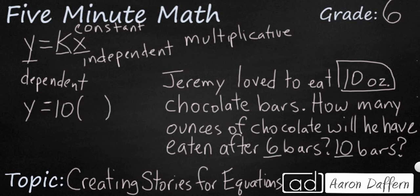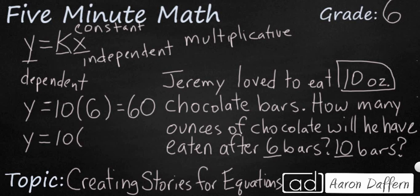So let's start with six: ten-ounce bars times six of them — how many ounces will we have? We're going to have 60 ounces. Or if we solve the second problem, ten-ounce bars multiplied by ten of them — ten ten-ounce bars — that's going to make 100 ounces.